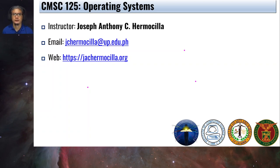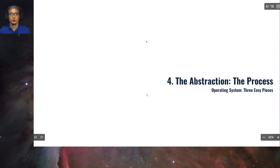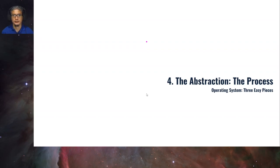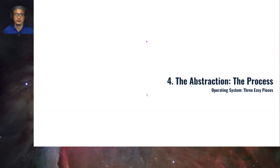Hello students, welcome to another lecture video for COMSI 125 Operating Systems. Welcome to Chapter 4, which is the process abstraction. In the previous chapter, we talked about some introductory concepts about operating systems. We learned that the operating system is responsible for sharing the CPU, sharing the memory, and providing access to devices. We also demonstrated examples of CPU virtualization, memory virtualization, concurrency issues, and the idea of persistence.